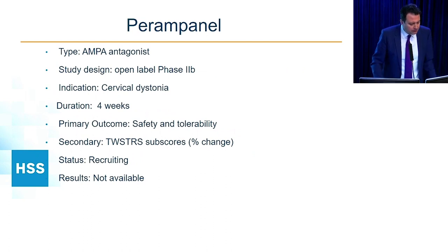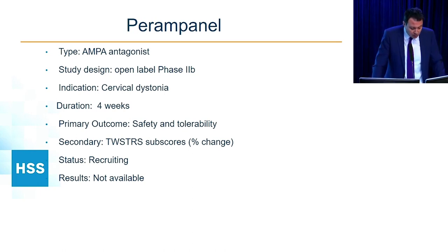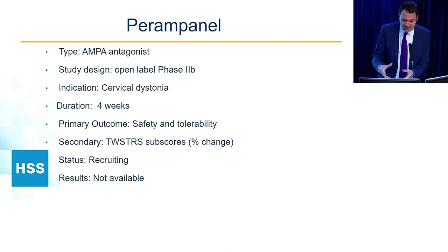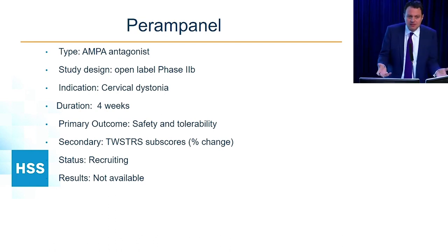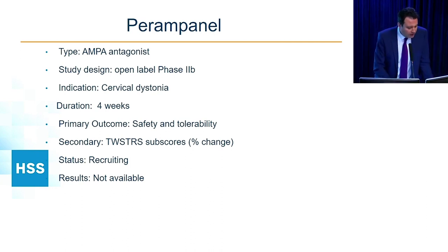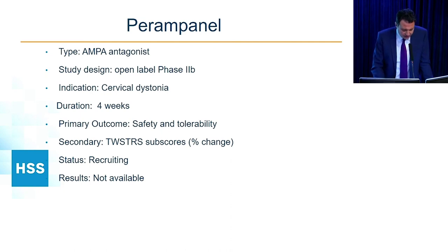Perampanel, an AMPA receptor antagonist, is being studied in an open-label phase 2B study for cervical dystonia over four weeks, examining safety and tolerability. I'm skeptical of open-label studies without a placebo control, since we know neurological symptoms can show 20% improvement from placebo alone. The study is actively recruiting; interested patients should look into sites, though I don't believe it's available at Cornell, HSS, or Mount Sinai.